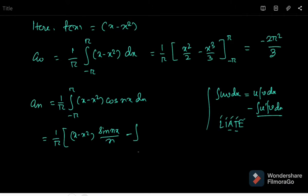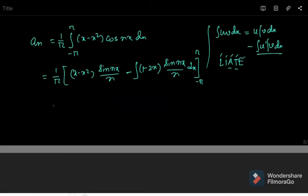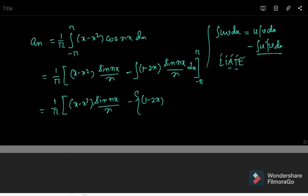The integration of sin(nx)/n produces minus cos(nx)/n². So we get (1/π) times: (x minus x²) sin(nx)/n minus, putting the bracket with the next integration, and sin(nx)/n integrating gives minus cos(nx)/n².